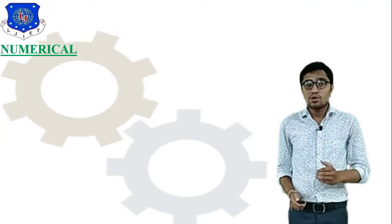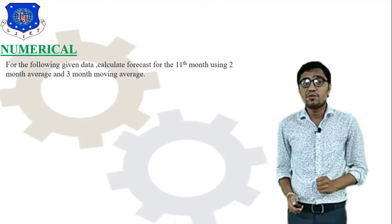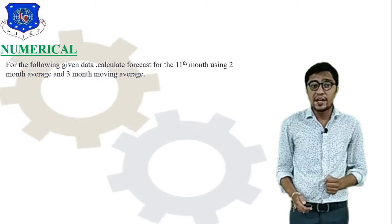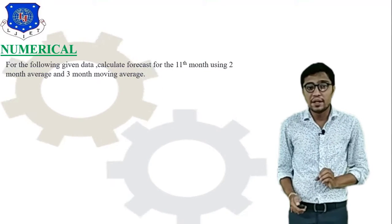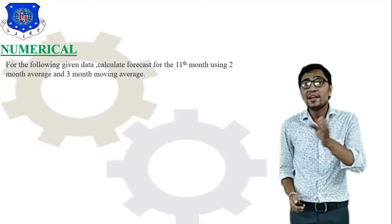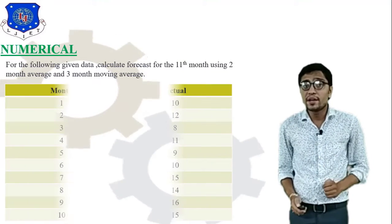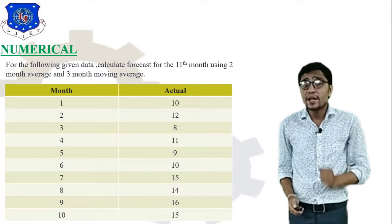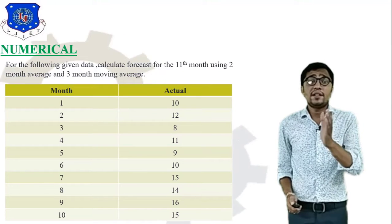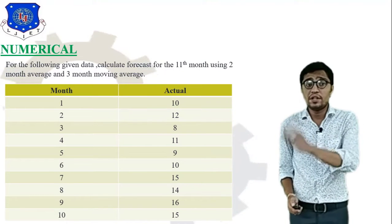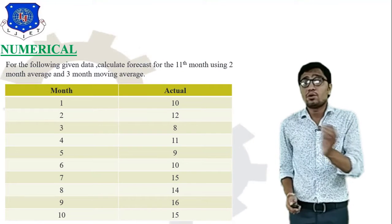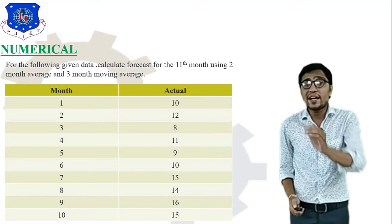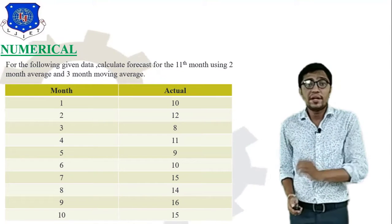Now here I have attached data related to a moving average numerical. For the following given data, calculate the forecast for the 11th month using two-month moving average and three-month moving average methods. There are 10 different months with 10 different actual demand values. In the first month, actual demand is 10.